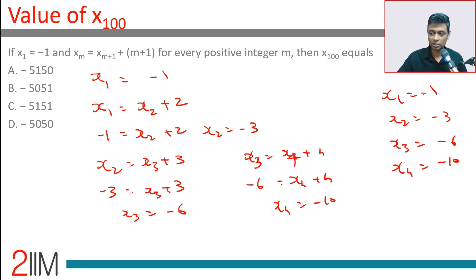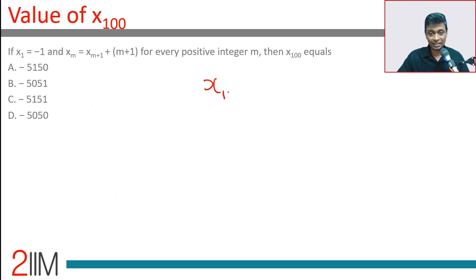A pattern emerges. Take the minus out: this is 1, 3, 6, 10. That's 1, 1+2, 1+2+3, 1+2+3+4, then stick a minus in front. So x100 is the sum of all numbers till 100 with a minus.